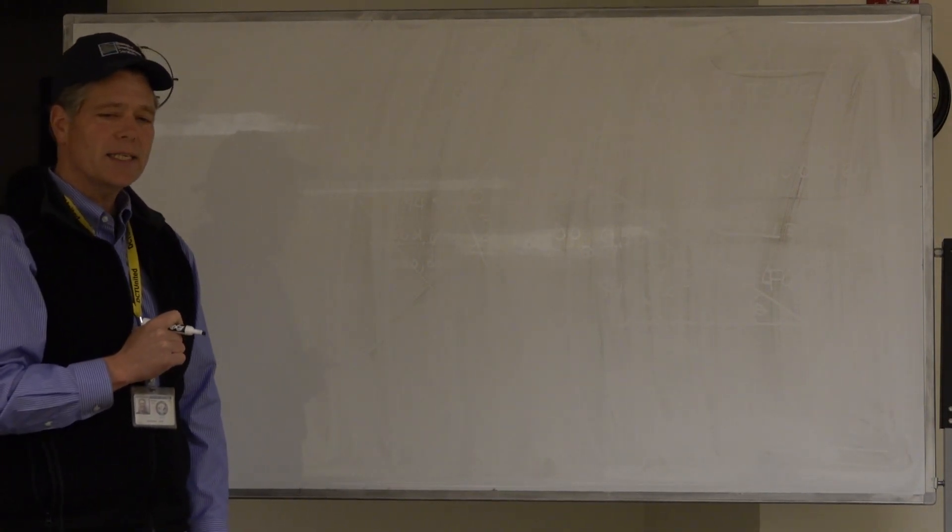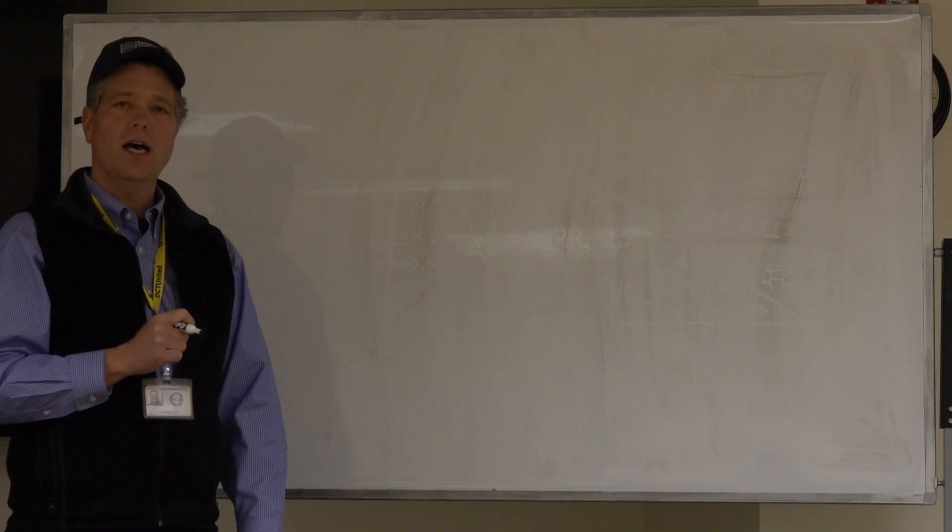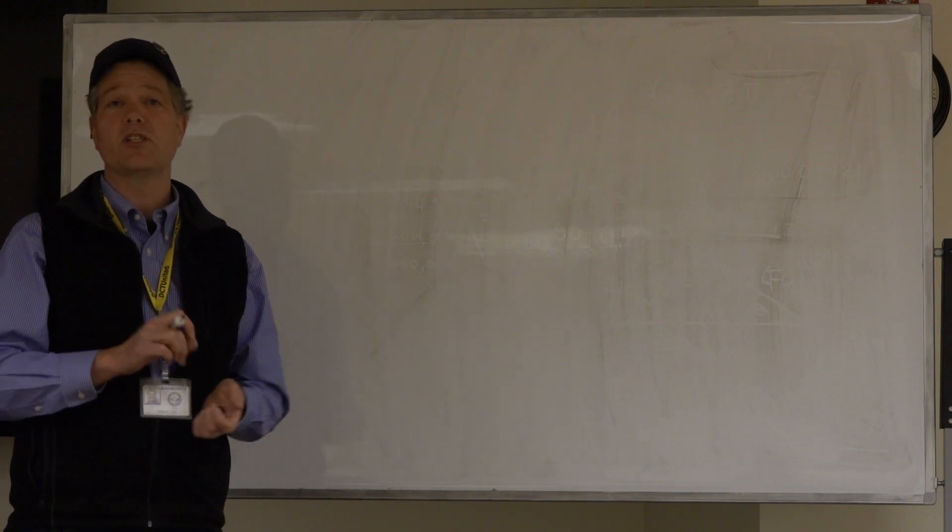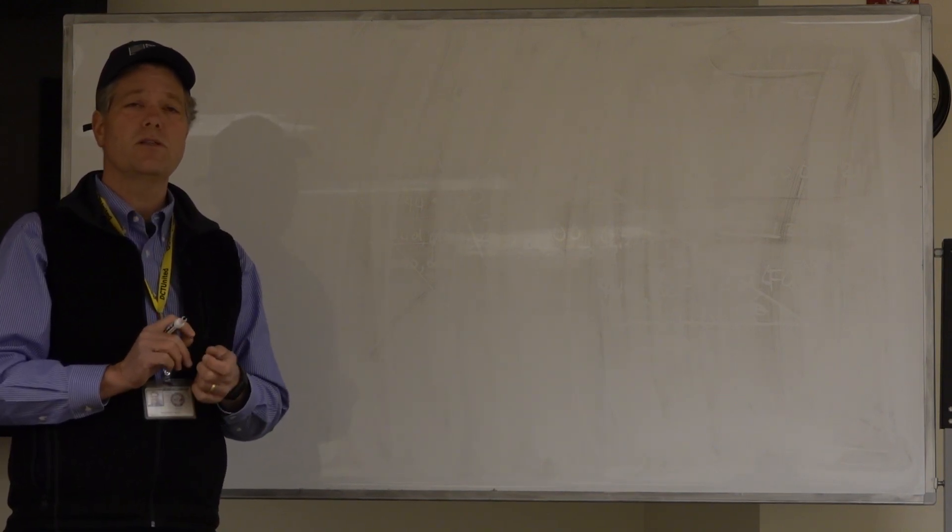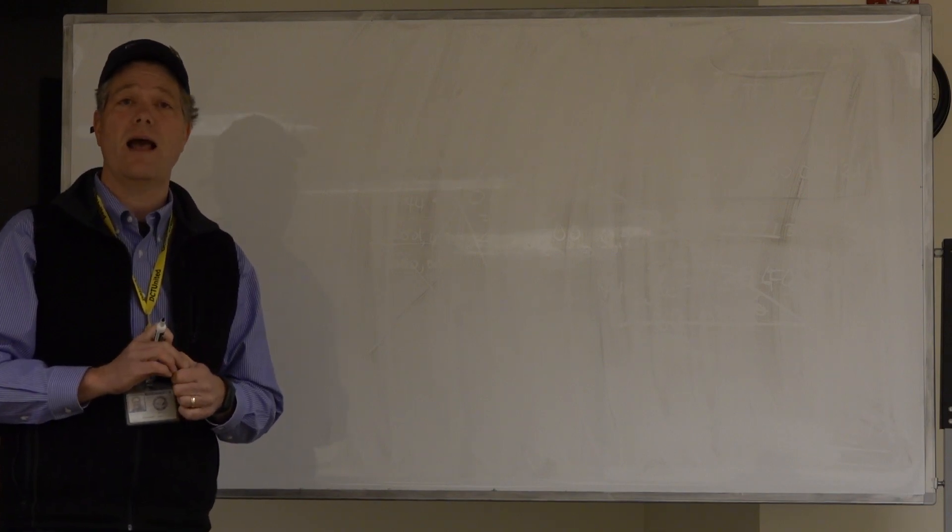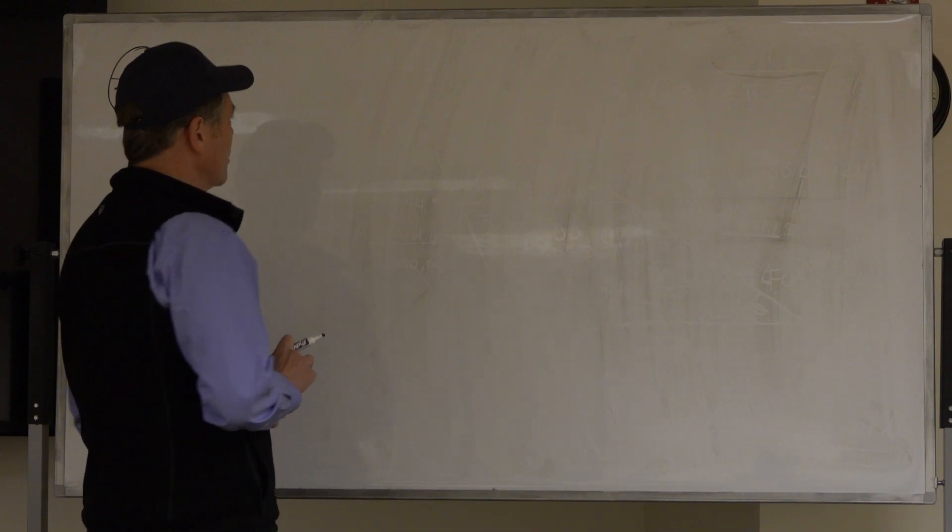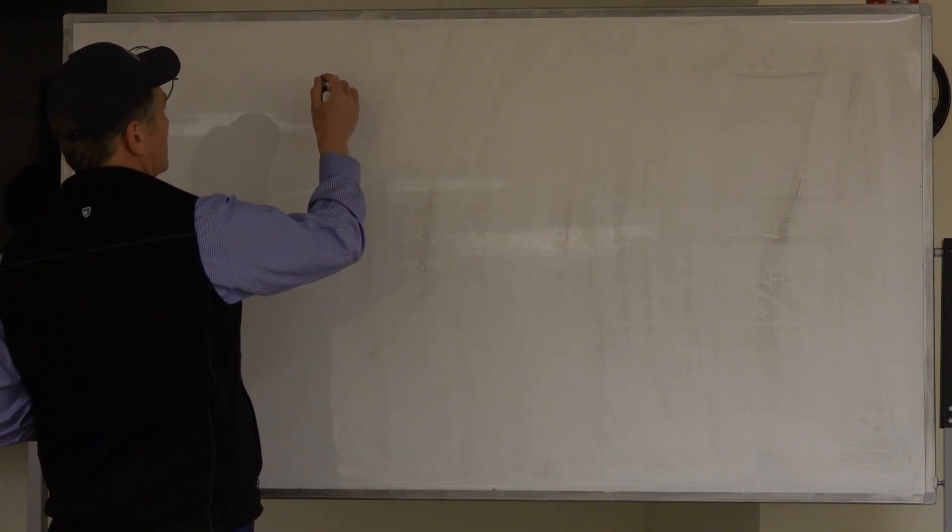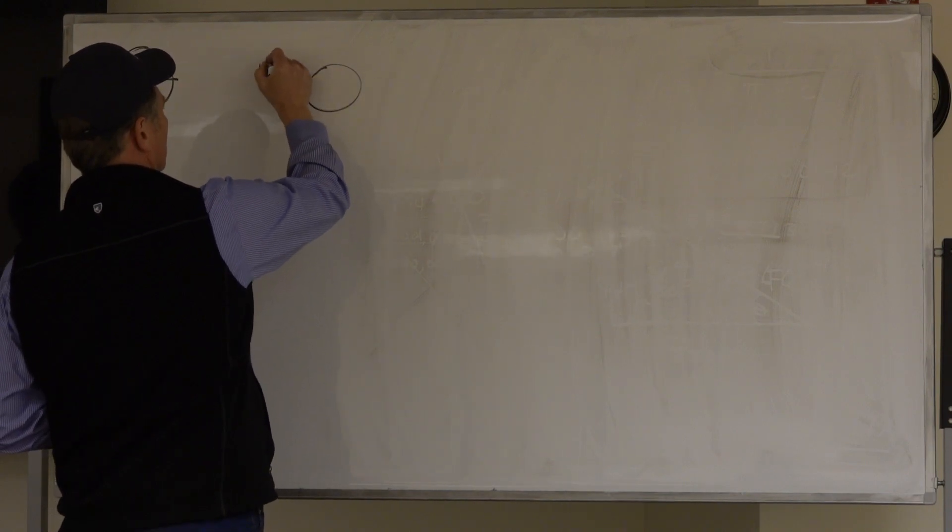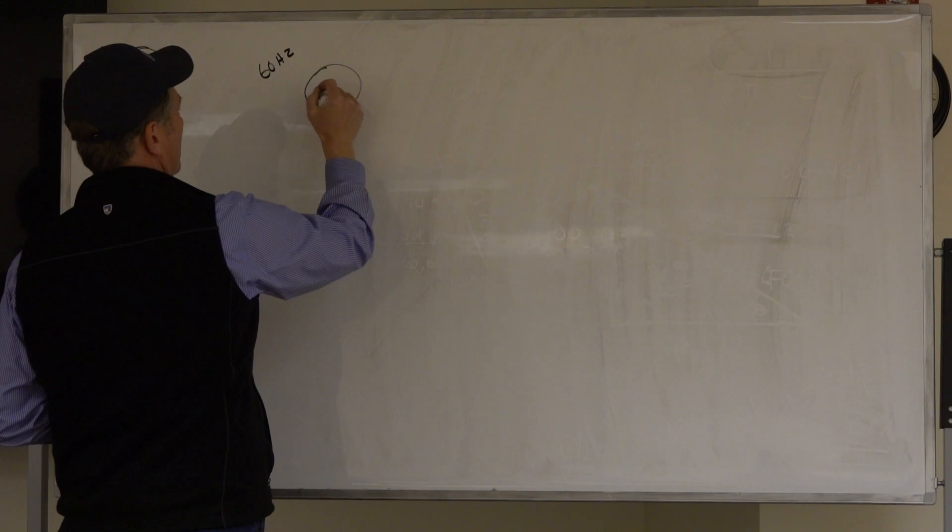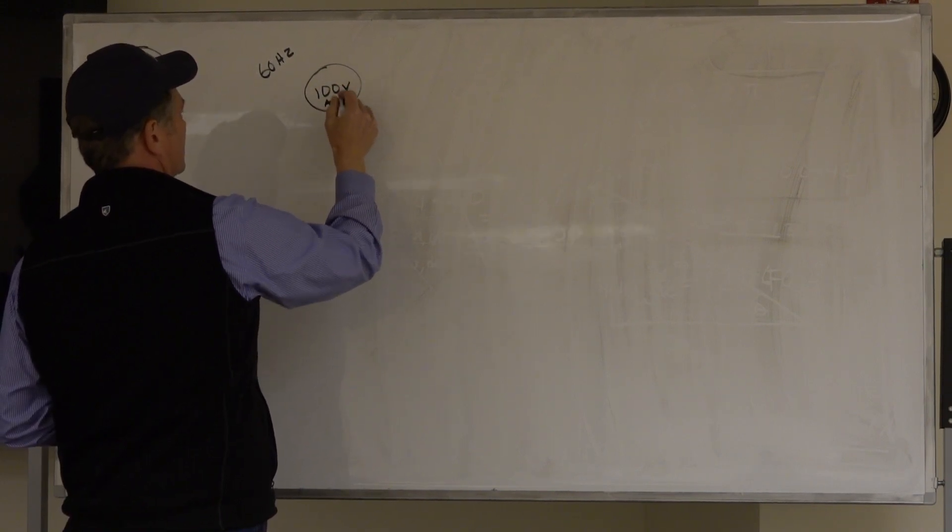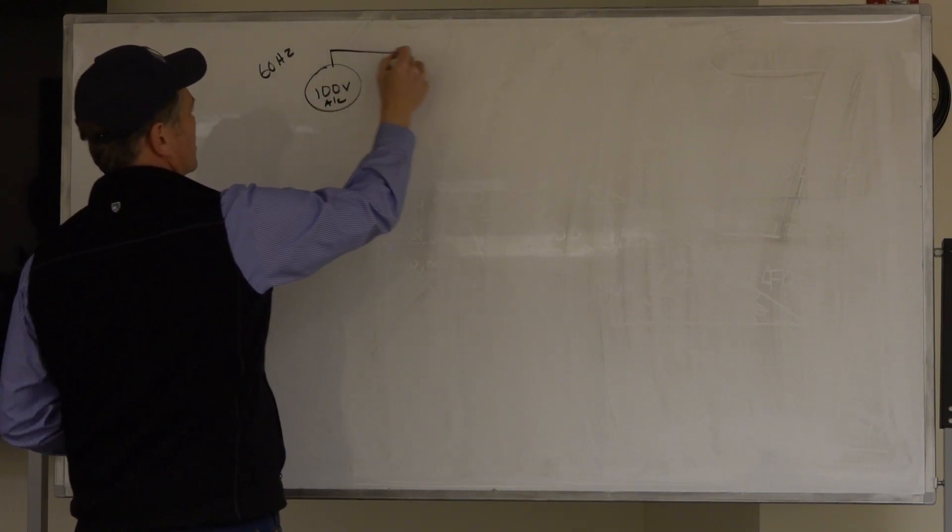Last week we looked at parallel circuits with capacitors in them. I want to run through a quick series circuit with capacitors in it, and then I'd like to jump into circuits with both capacitors and inductors in them, because there are a couple of subtleties that happen there. So let's go ahead and do a quick circuit with capacitors in series. Let's say I've got an AC power source. I'm going to call it 60 Hertz, and I'm going to say, for the sake of ease, I'm going to say it's a hundred volts AC, 60 Hertz, and I said we were going to do series.